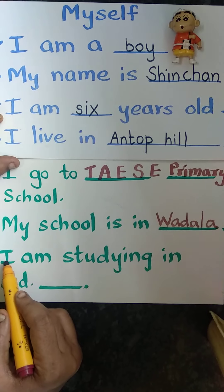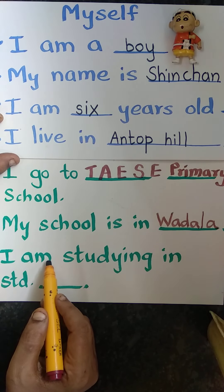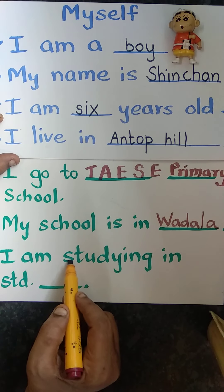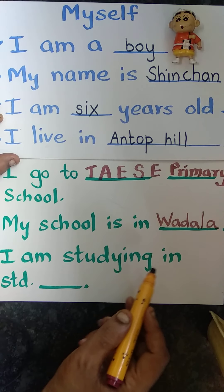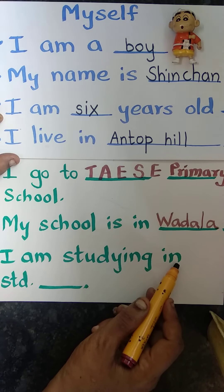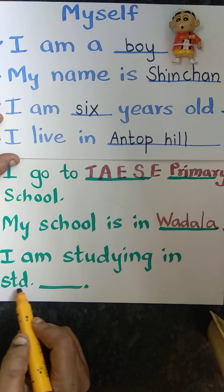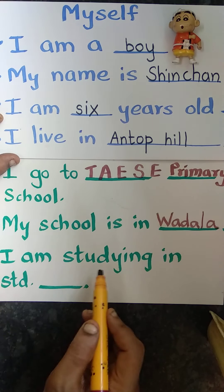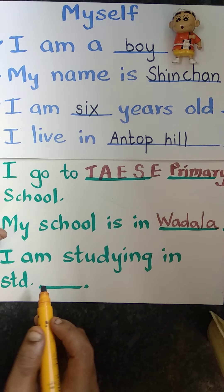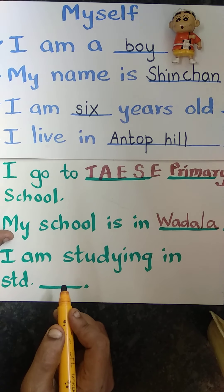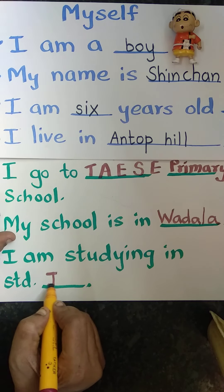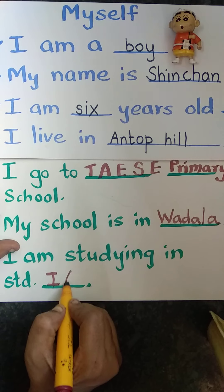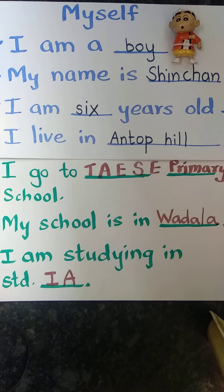Next: I-A-M — 'I am' — S-T-U-D-Y-I-N-G — 'studying' — I-N — 'in' — standard. I am studying in standard. Which standard? First — write like this: First A. Over.